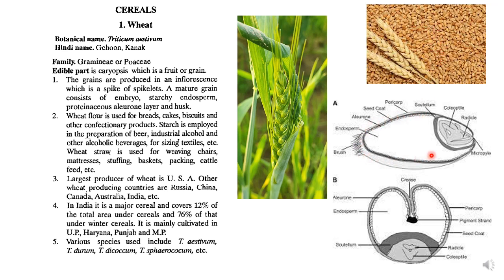You can see this is the inflorescence of wheat and this is the grain of wheat. When you cut this grain, this is the section of the wheat in which we see the various parts. A mature grain consists of an embryo, starchy endosperm — this white portion — a proteinaceous aleurone layer, and a husk. This is the longitudinal section and this is the transverse section of wheat, showing the aleurone layer, whitish endosperm, and the embryo.